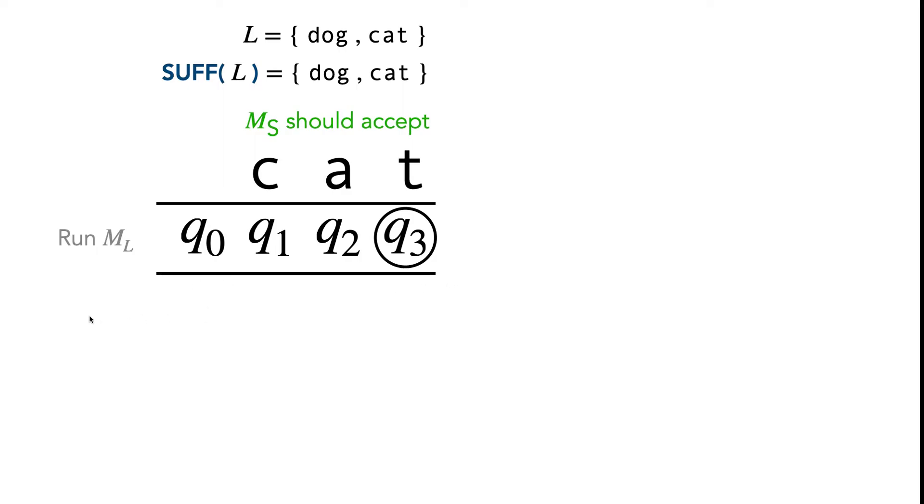Additionally, we also want to run M_L on all of the proper suffixes of cat. So this would be one thread. But we also want to run M_L on just at, so we start a new thread here to read a, t. We want another thread for reading just t, so we start a new thread here and just read t. And we want another thread for reading just the empty string.